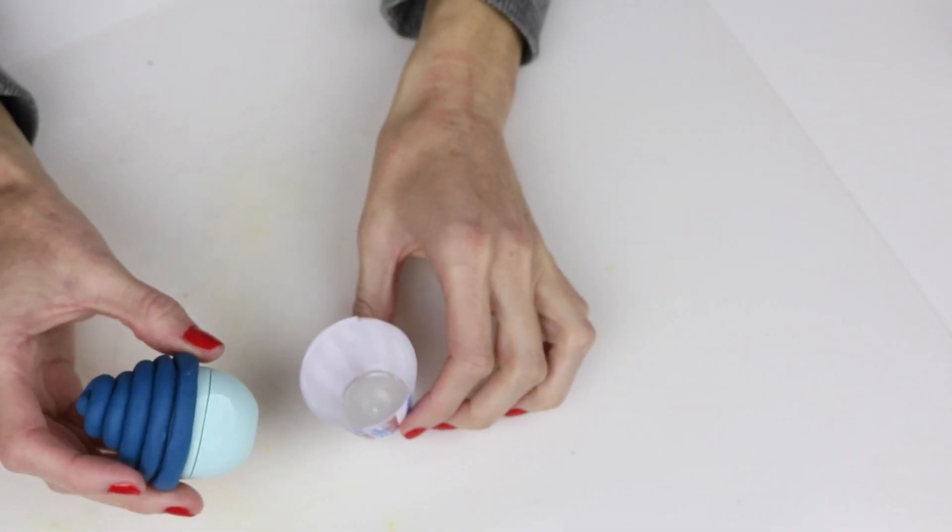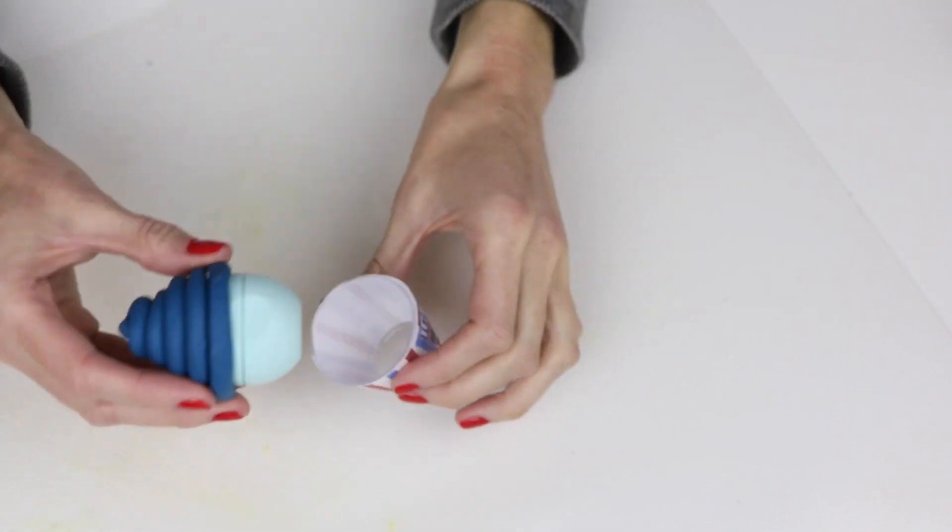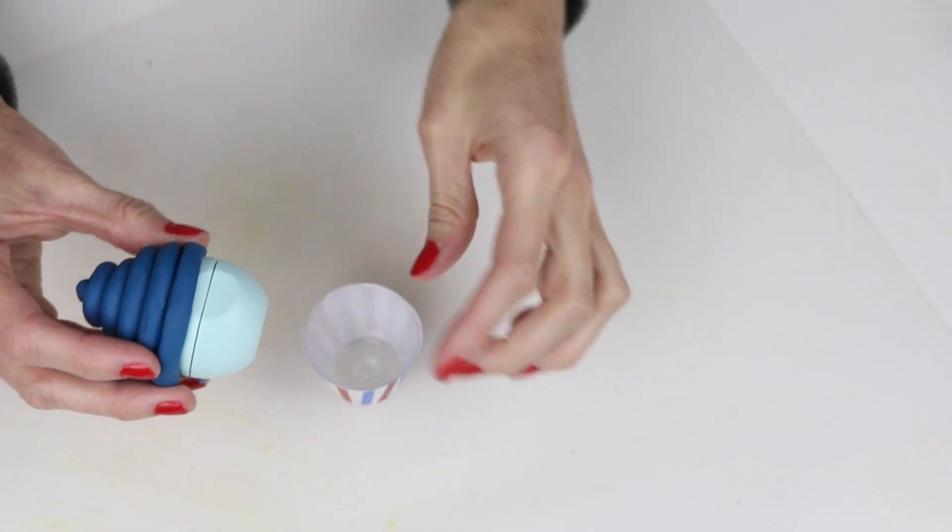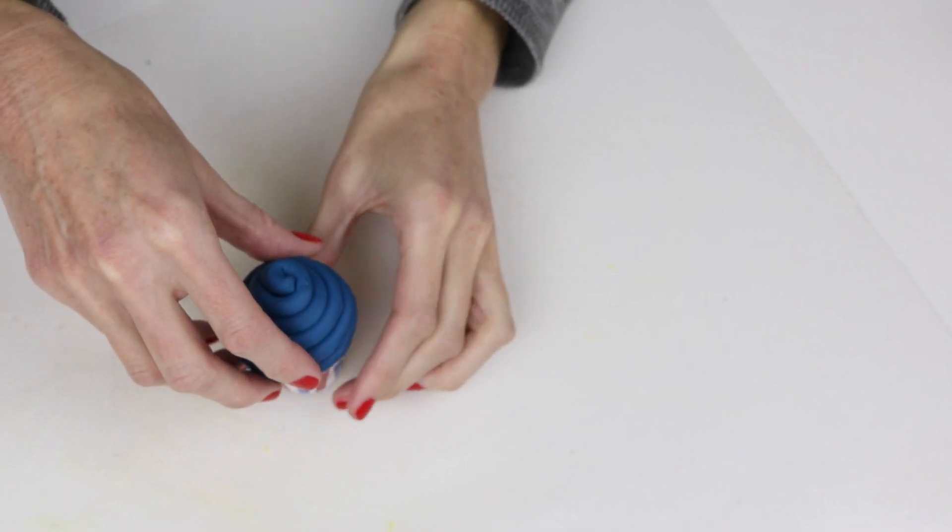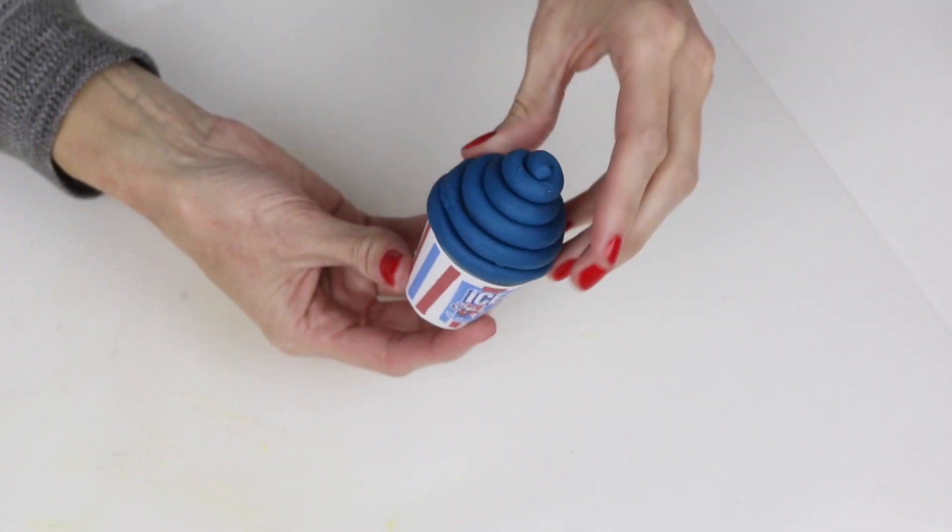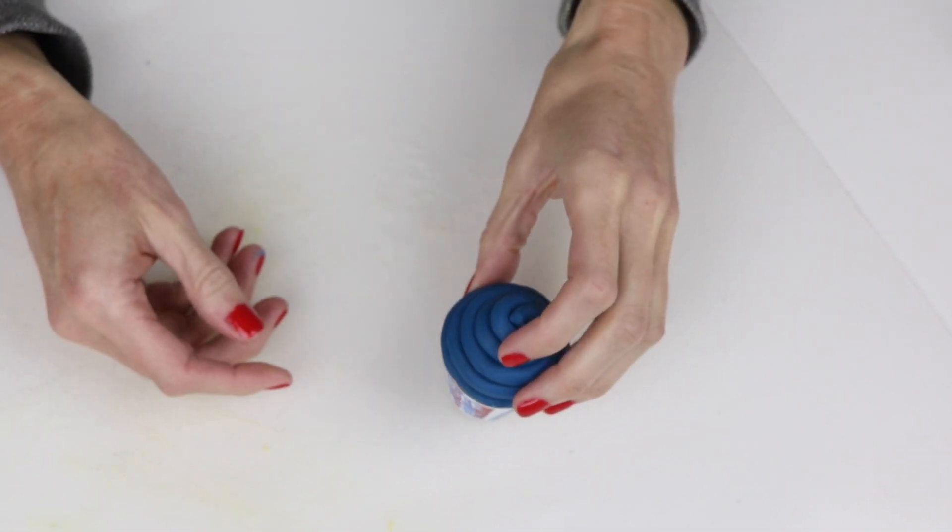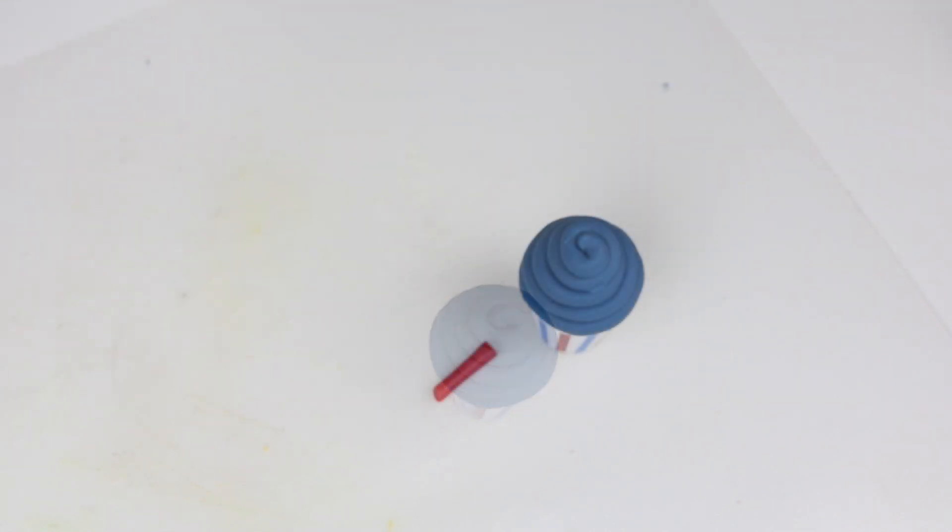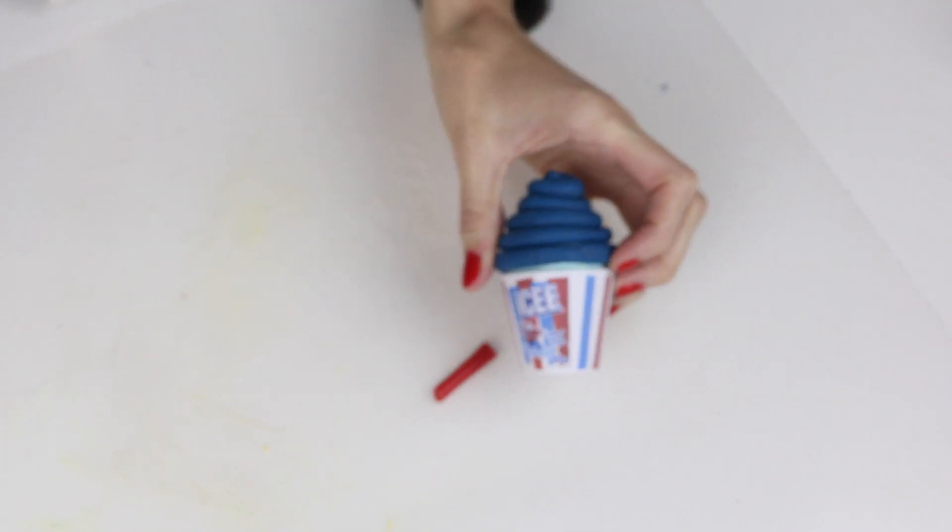Now you will just want to secure the EOS container in the cup. I just did that by applying some E6000 glue to secure it in there. Then I grabbed my red straw and dabbed a little bit of E6000 glue on the end.